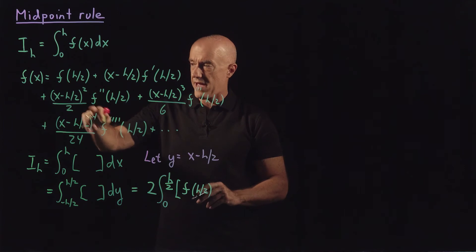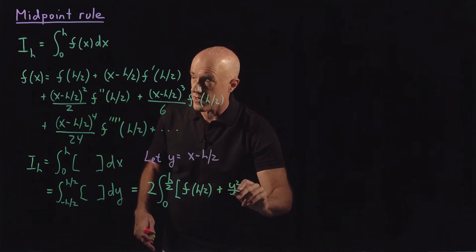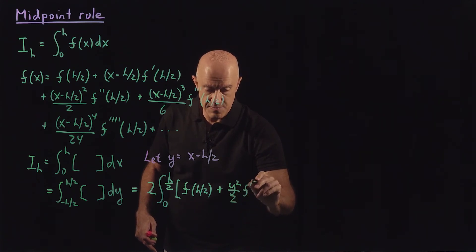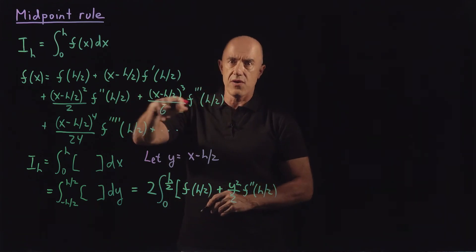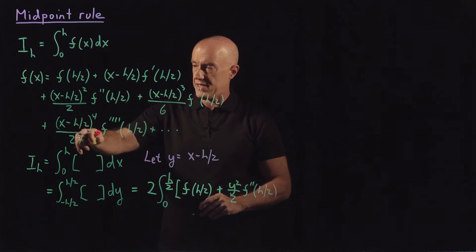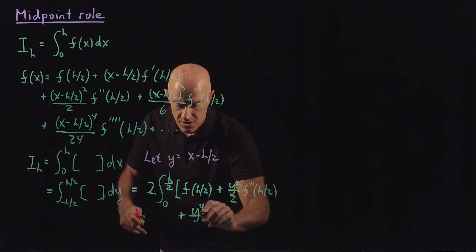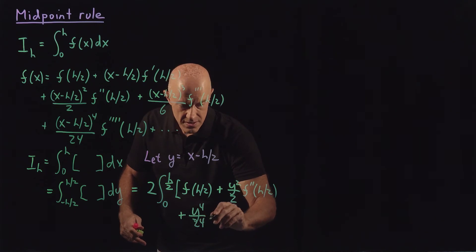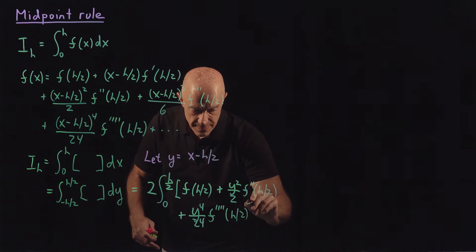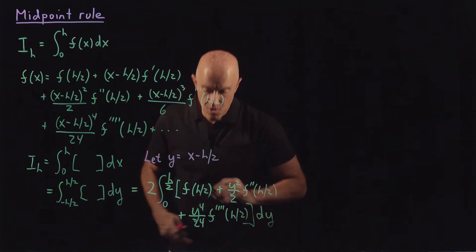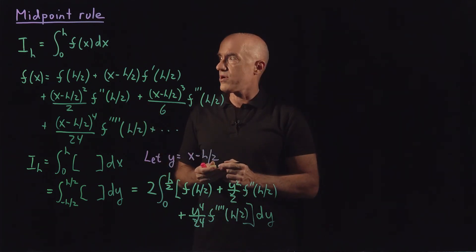The odd power of y — x minus h over 2 becomes y — goes to 0. Then we have the even power: plus y squared over 2 times f double prime of h over 2. The next odd power also goes to 0, and then we have the even power plus y to the fourth over 24 times the fourth derivative of f at h over 2, times dy, dropping all higher order terms.